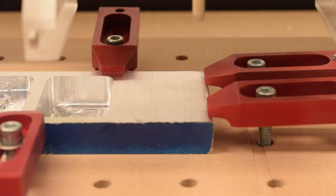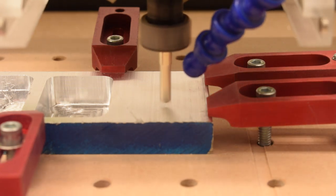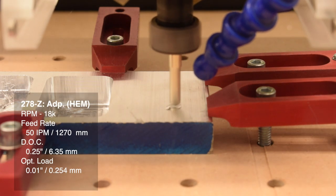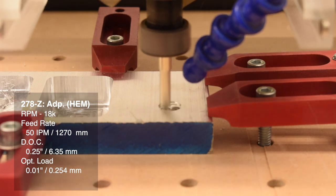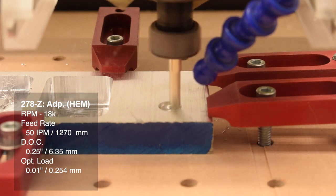I'll be using the 278Z quarter-inch single flute end mill for this test. Cutting parameters are as follows: 18,000 RPM, 50 inches per minute, quarter-inch depth of cut, and a 0.01 inch optimal load.